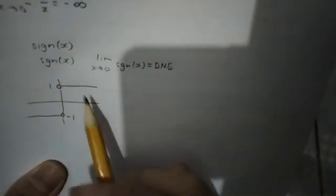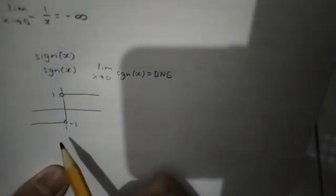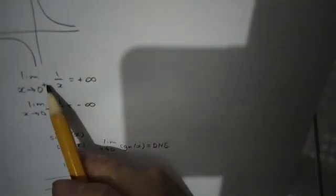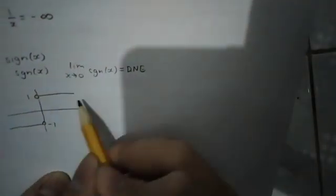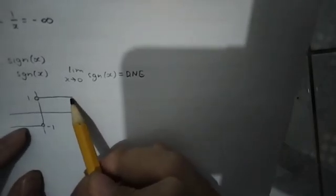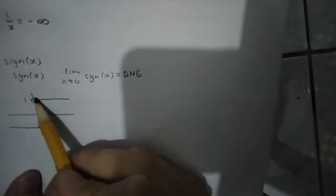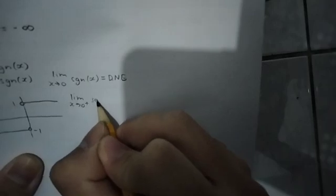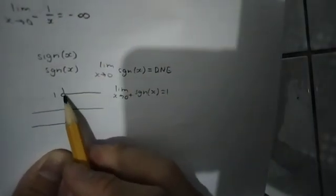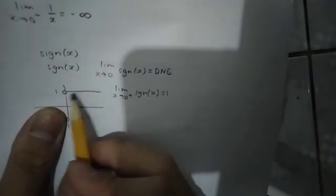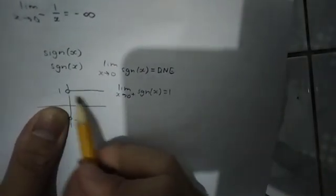But if I consider left-hand and right-hand limits — this is called the right-hand limit and this is called the left-hand limit. So if I consider the right-hand limit, ignoring the left side, and I write that as x approaches 0+, I find that it is 1, because this is the value it approaches from that side — in fact it's constant.